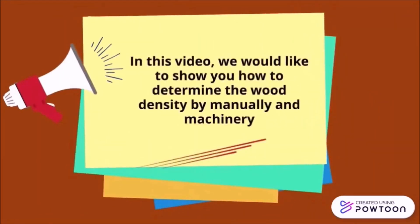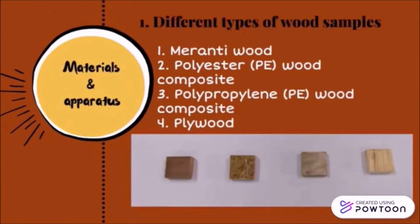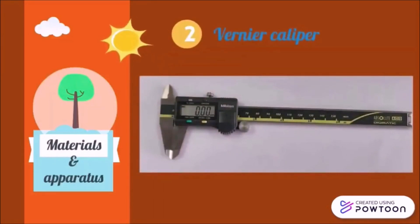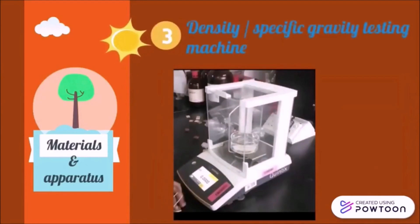In this video, we would like to show you how to determine wood density both manually and by machinery. First, we need to prepare different types of wood samples, such as meranti wood, polyester wood composite, polypropylene composite, and plywood. We also need the vernier caliper and the density or specific gravity testing machine.